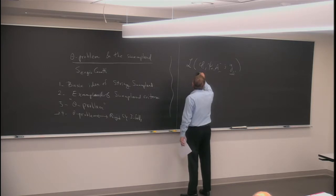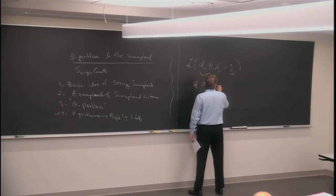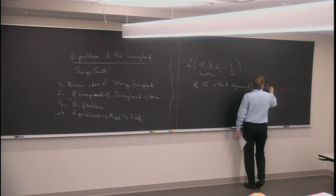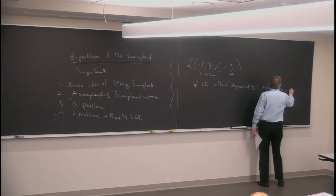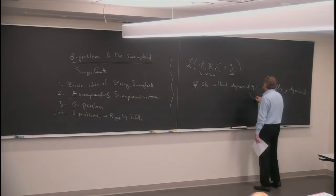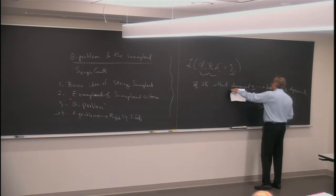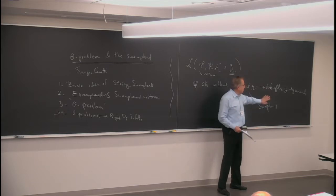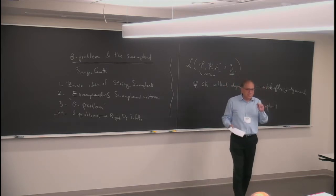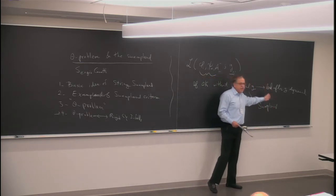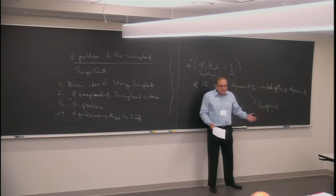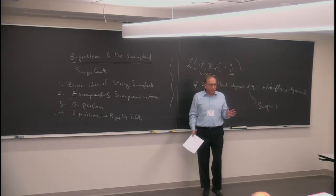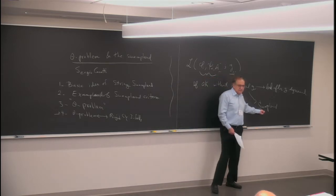The technical definition of swampland: theories which are okay without a dynamical metric but become bad after the metric is made dynamical. These theories are called swampland. They have a good chance of working but somehow don't work once gravity is included. Of course, if something doesn't work in physics, at some point we have to give an explanation of why — there's always some reason, deep or simple, that we have to understand.